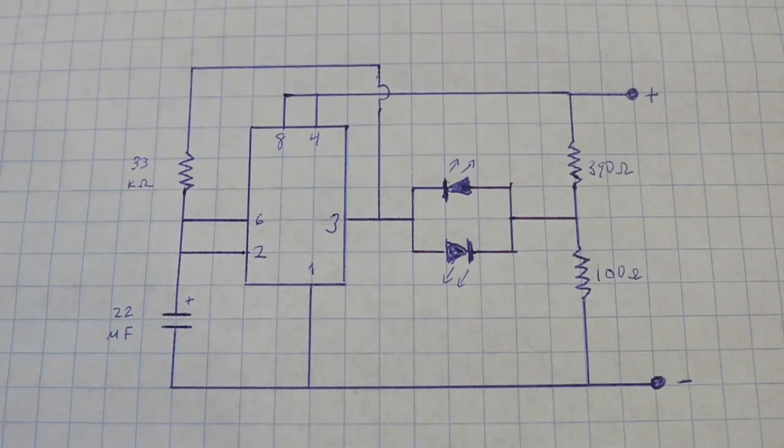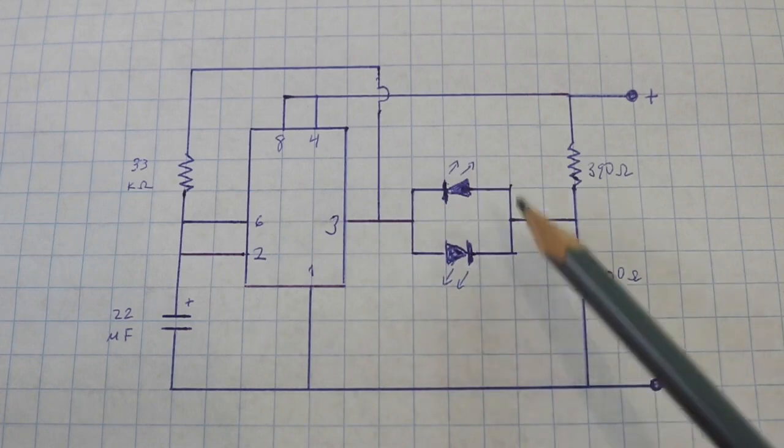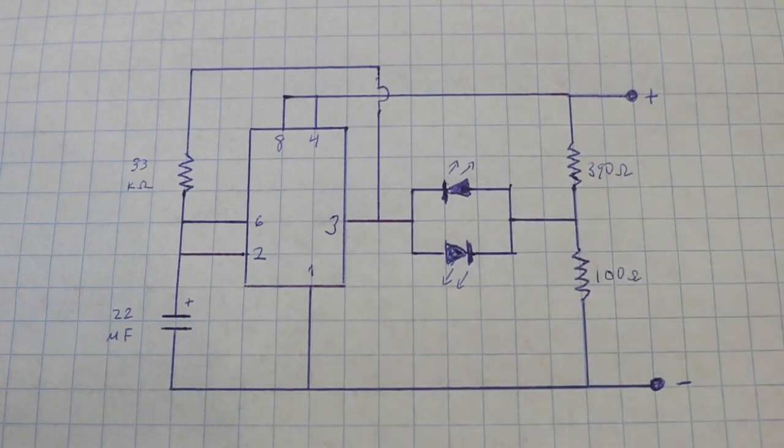And here is the full circuit. The frequency of oscillation of the two LEDs is controlled by this capacitor and this resistor.